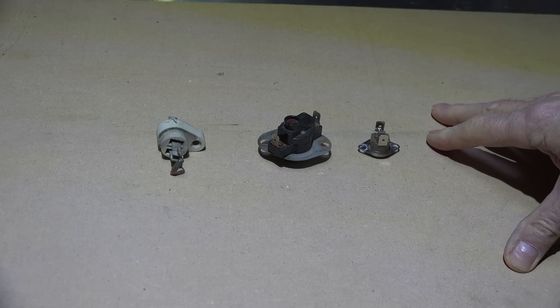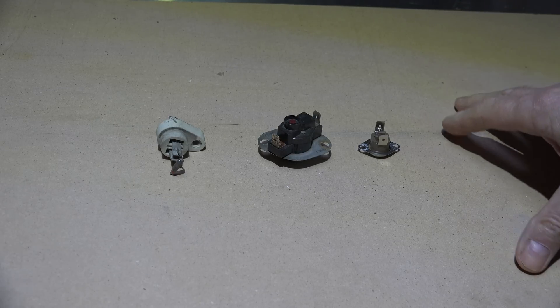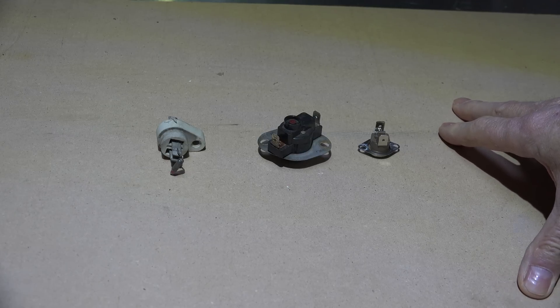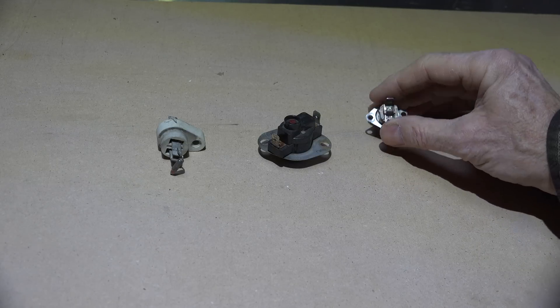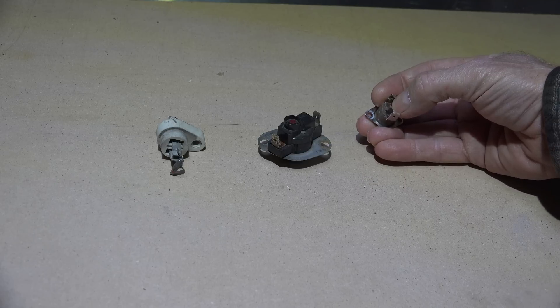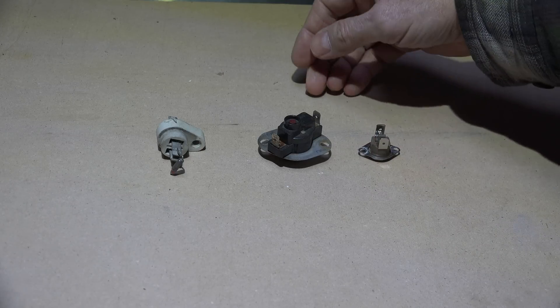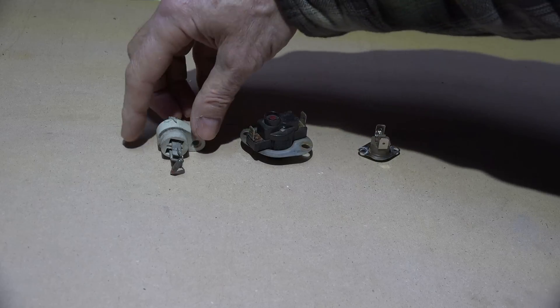Here we're looking at three different types of manual reset rollout switches. This one here has a button on it. This one's gonna pop out and of course it has to be reset before the burner will come back on. This one's just a different style with the pop out on it.